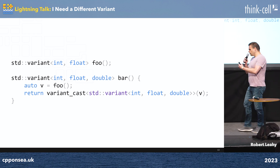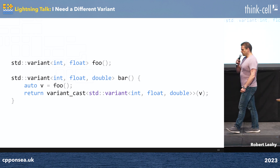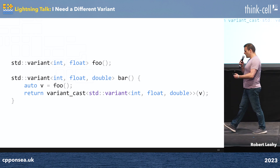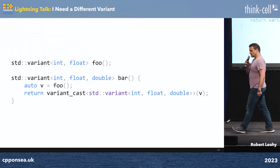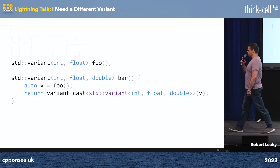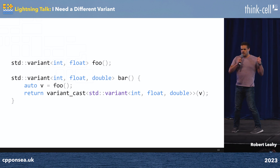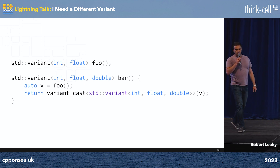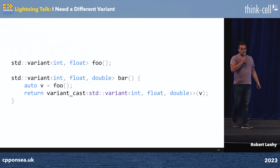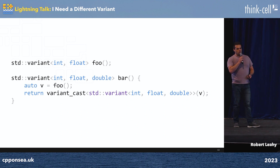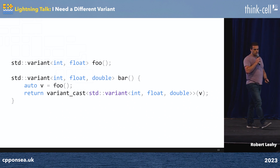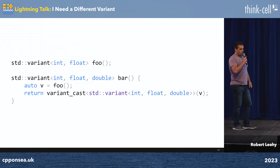But we're C++ programmers. We know things. We know things the compiler doesn't. We know things the type system doesn't. So what if we happen to just know that despite the interface, `foo` only ever returns ints?